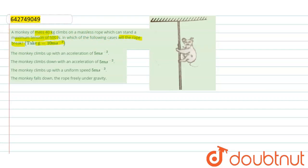Let's find out and let's take each case one by one. This is an object like monkey. Tension is acting upward and weight of monkey is acting downward.